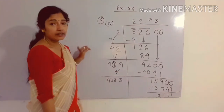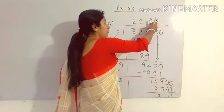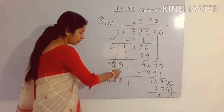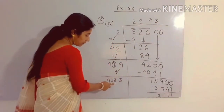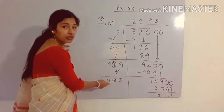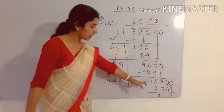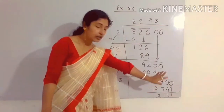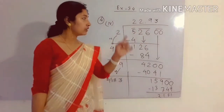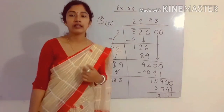We can take another pair of zeros since we need 2 decimal places. Bring down 00 to get 15900. Double of 9 is 18, carry 1; 4 + 1 = 5, so new divisor starts with 458. Try 3 in ones place: 4583 × 3 gives a number less than 15900. So we get 3 after the decimal. The final answer is 22.93.